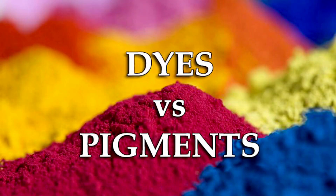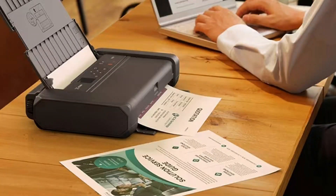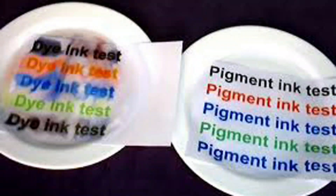Dye ink is a molecular level, fully dissolved ink. This ink is a complete compound solution. The probability of blocking the ink head is very small. It is easy to absorb by the material after printing, colorful, and low cost. The disadvantage is that it is not waterproof, and because the dye molecules decompose quickly under ultraviolet radiation, it will obviously fade within one month of outdoor use.